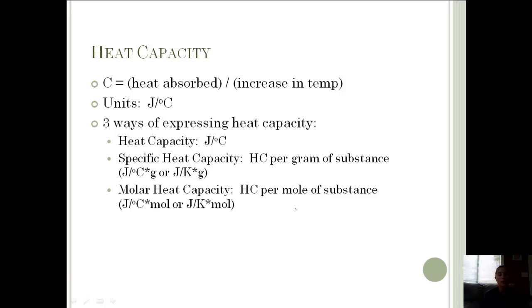There are three ways to express heat capacity. In general, heat capacity is joules per degree C. We also have specific heat capacity, which is the heat capacity per grams: joules per gram degree Celsius or joules per gram Kelvin, depending on what units your temperature is in. We can also have molar heat capacity, which is the heat capacity per mole of substance: joules per mole degree Celsius or joules per mole Kelvin.